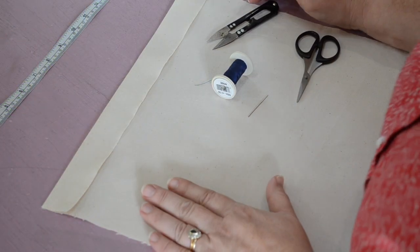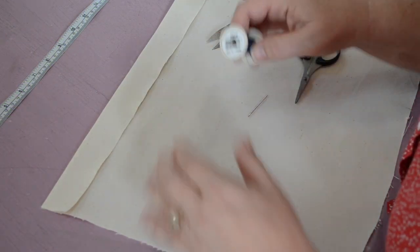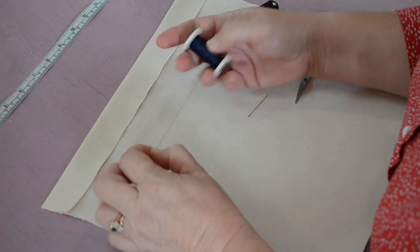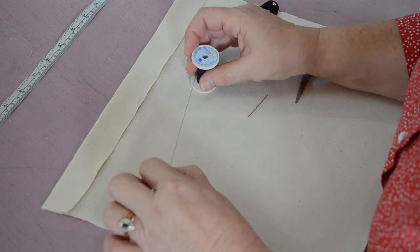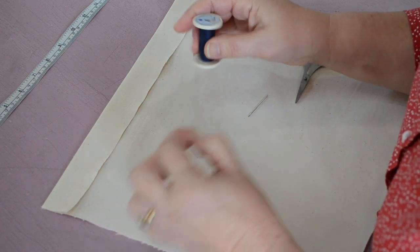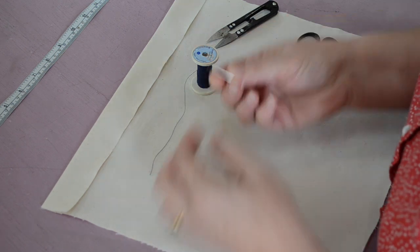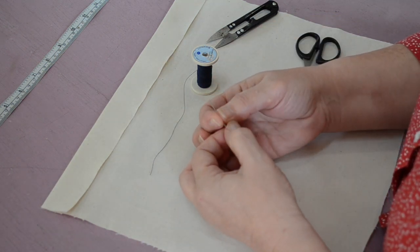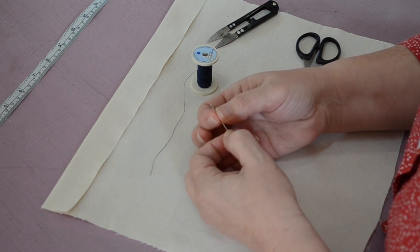For your invisible hemming you're going to need thread that actually matches the color of your fabric. We're using a dark thread today just so I can show you the stitches clearly. You want a hand sewing needle. Don't choose too big a needle. You want one that's just comfortable for you to use.